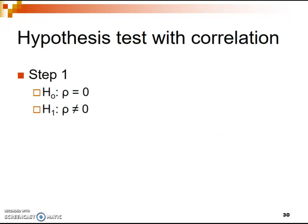Our alternative hypothesis is that Rho, the population correlation, is something other than zero — it's not equal to zero, meaning there actually is a correlation. So we're essentially testing the correlation identified in our sample and examining whether that correlation is zero or not. We're always testing this null hypothesis that assumes it's zero, and we're looking for proof that this is wrong.